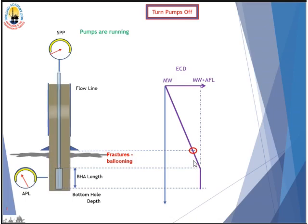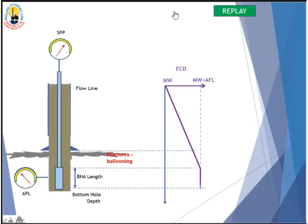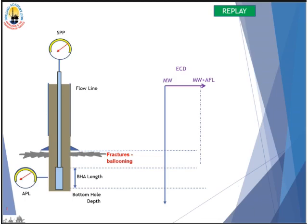When we stop the pump, stand-pipe pressure drops and the annular pressure loss at the pressure gauge comes down. The fractures relax and close up, and they spill the mud they took before back into the wellbore. We will see this mud return at surface at the flow line. This is all about wellbore ballooning — it has everything to do with ECD or AFL, annular friction loss.